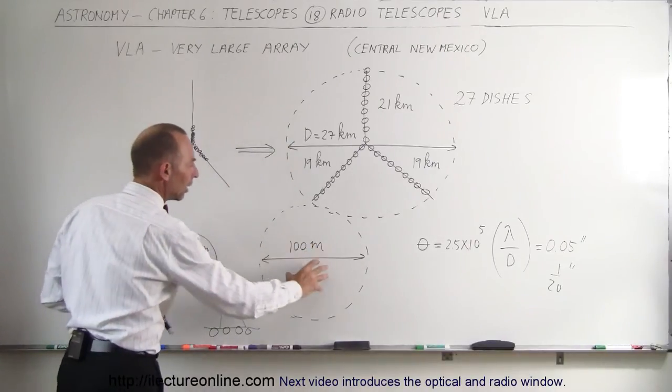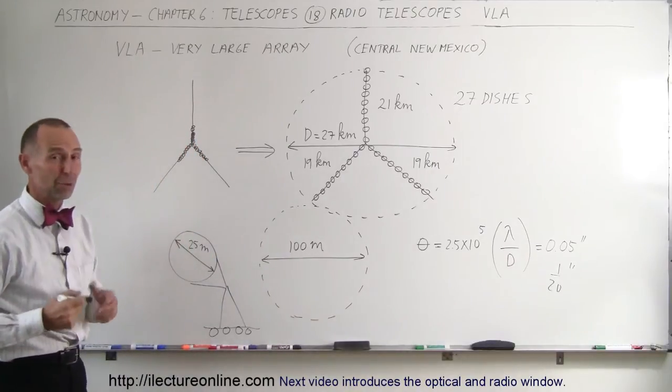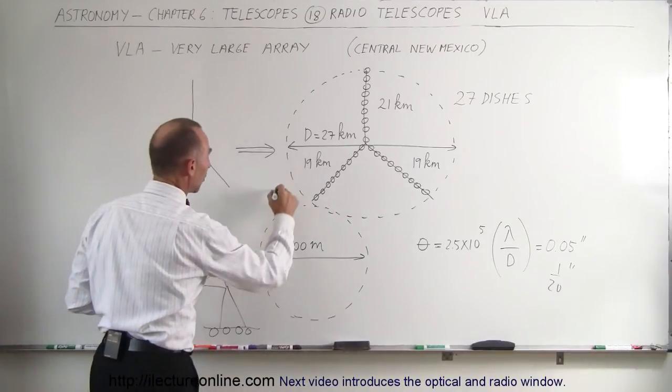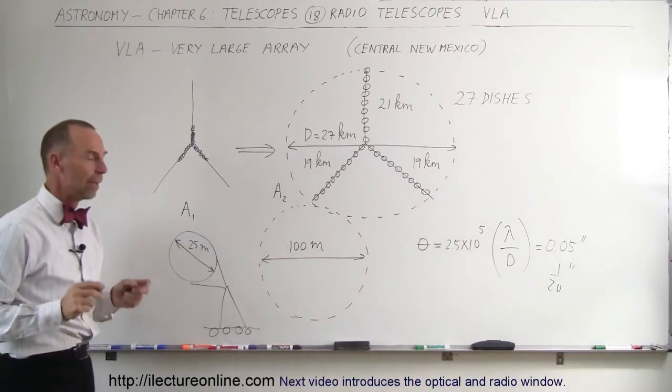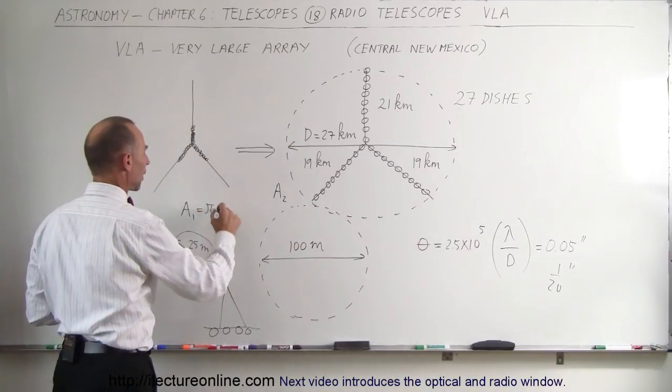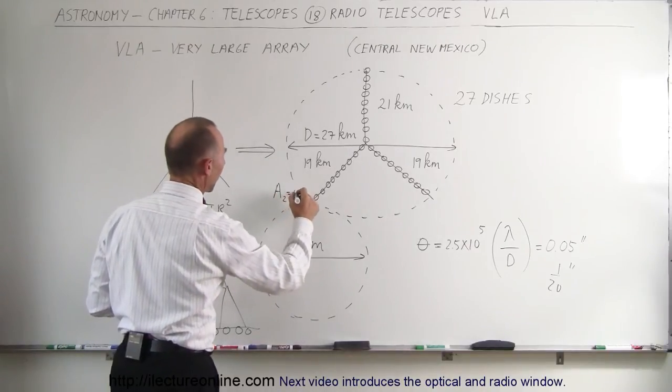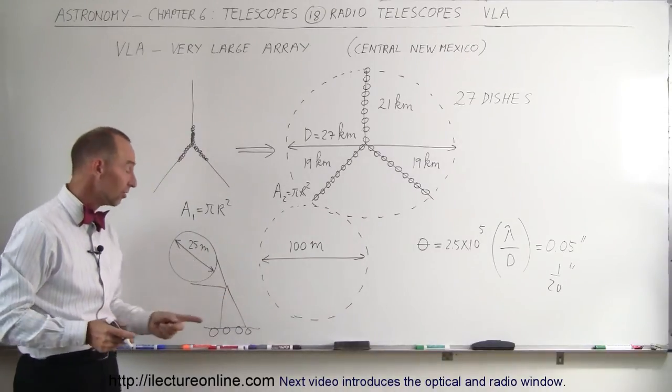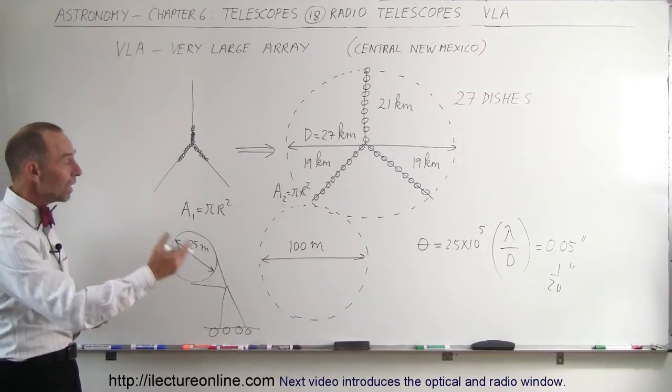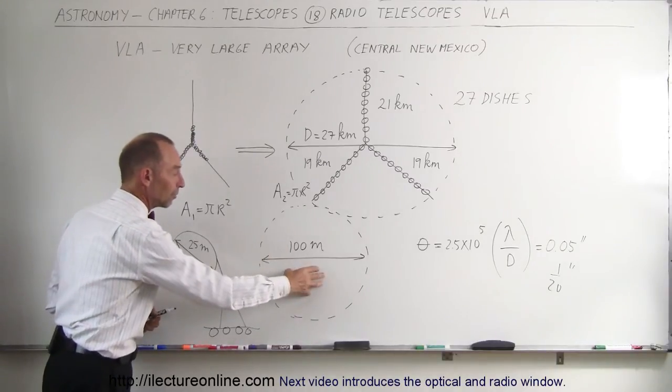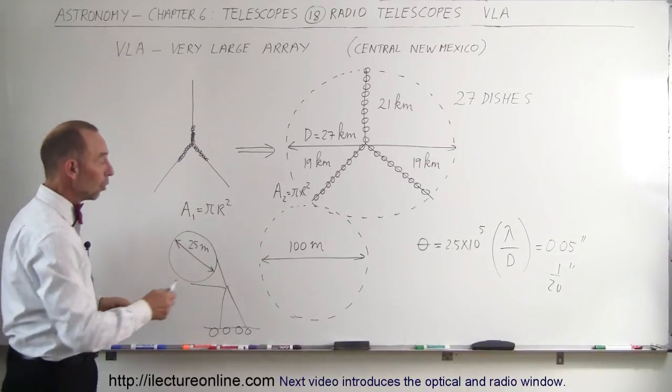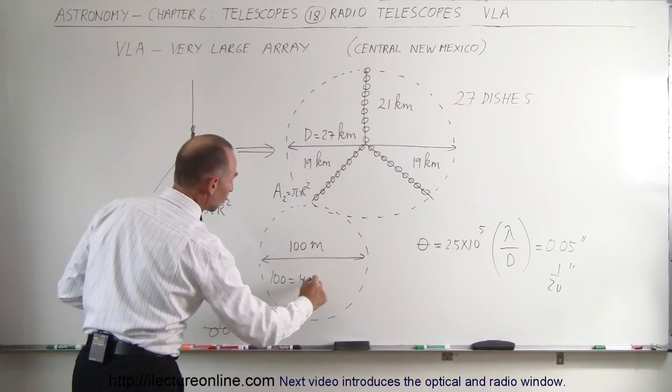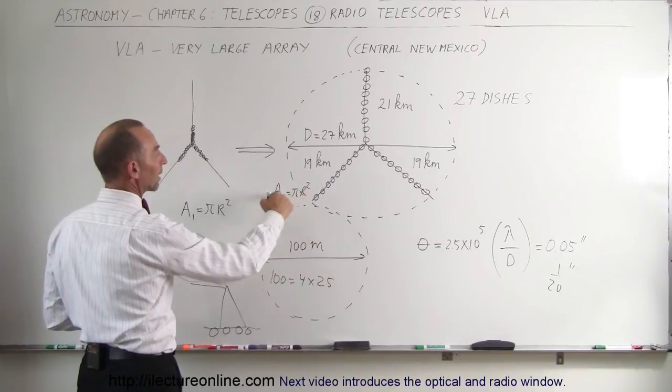So let's see, how much more energy can a 100 meter telescope collect versus a 25 telescope? Well, it all comes down to the area. So let's say that A1 is the area of a 25 meter telescope and A2 is the area of a 100 meter telescope. Remember that the area is equal to pi*r^2 when it comes to circles. And so this would be pi*r^2 for this one. If this one is 100 meters and this one is 25 meters in diameter, then this would be a 50 meter radius. This would be a 12.5 meter radius. So the radius comparison will be 4 to 1.